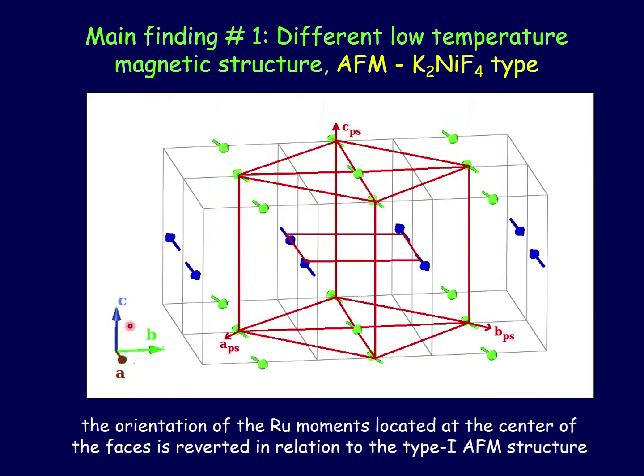In this slide we can actually see the low temperature structure with the two ruthenium sublattices. So this is actually the first main finding of our work. We found a different low temperature magnetic structure to what was known in the literature up to this point.